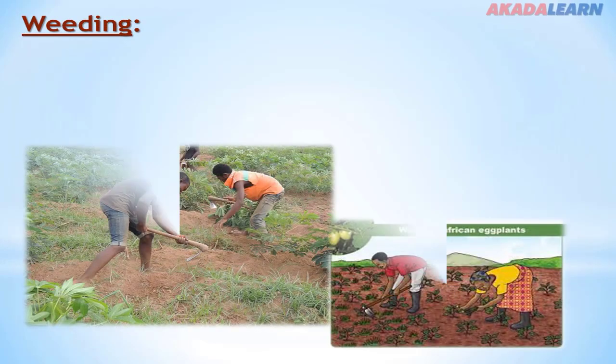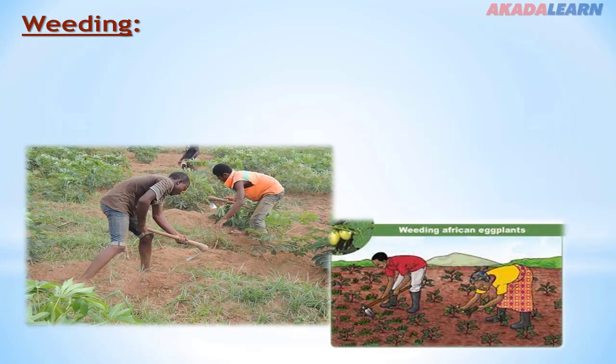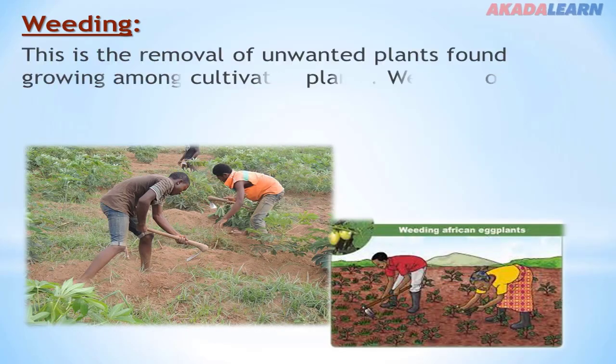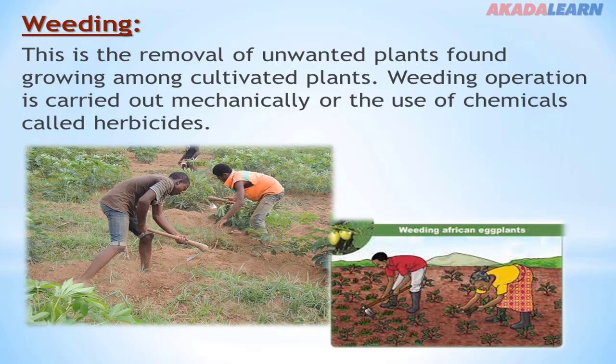Weeding. Weeding is the removal of unwanted plants found growing among cultivated crops. Weeding operations are carried out mechanically or by the use of chemicals called herbicides.